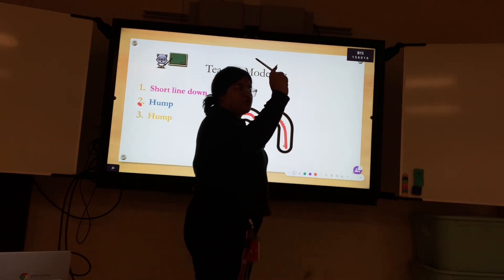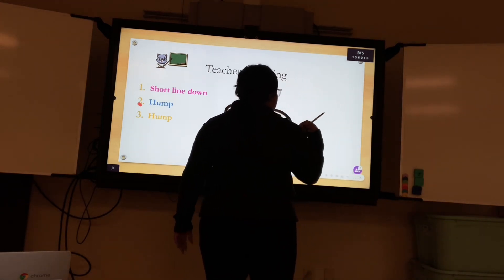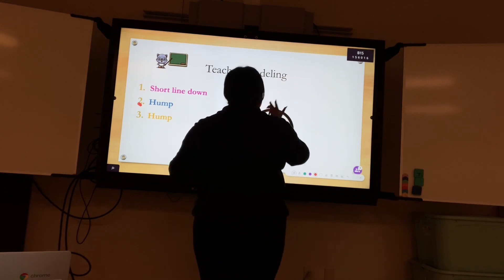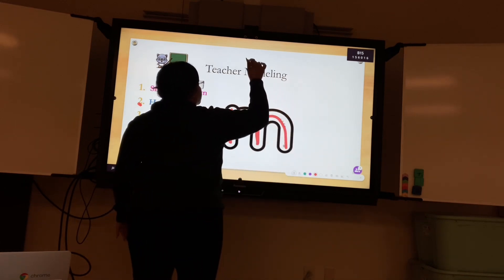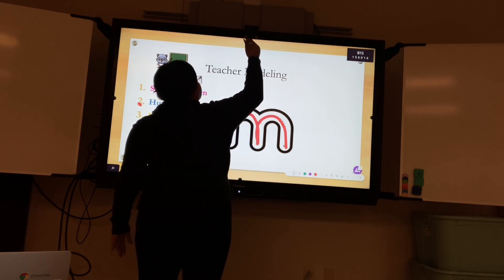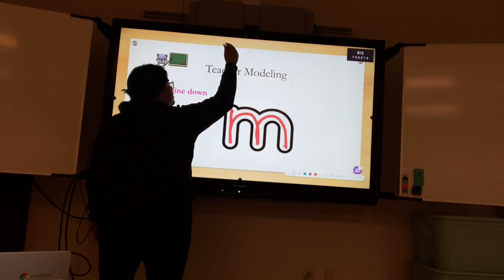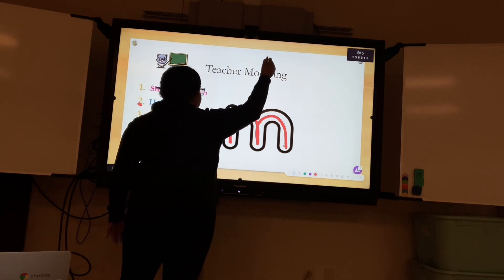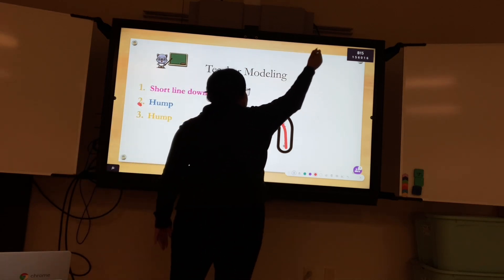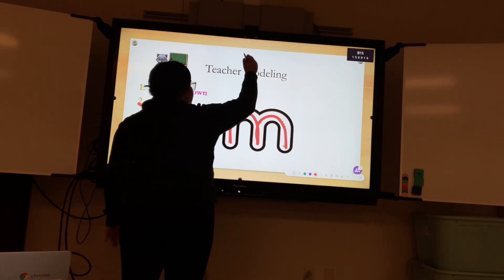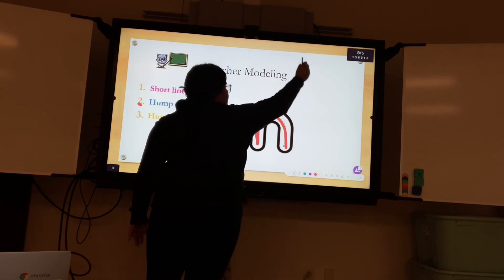So this is what I want you to do. I want you to grab your pencil and then hold it up in the air with our imaginary whiteboard. And I want you to act like you're writing on the board. So what are we going to do? Short line down. Make a hump. Make another hump. Do it again. Short line down. Make a hump. Another hump. Good job.